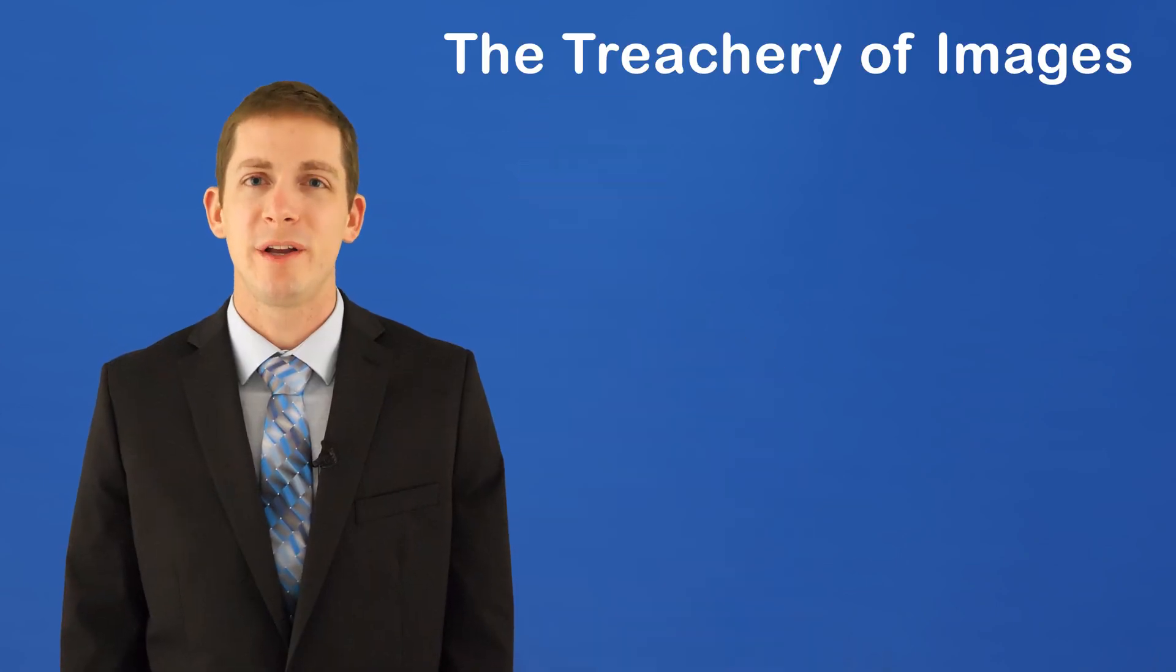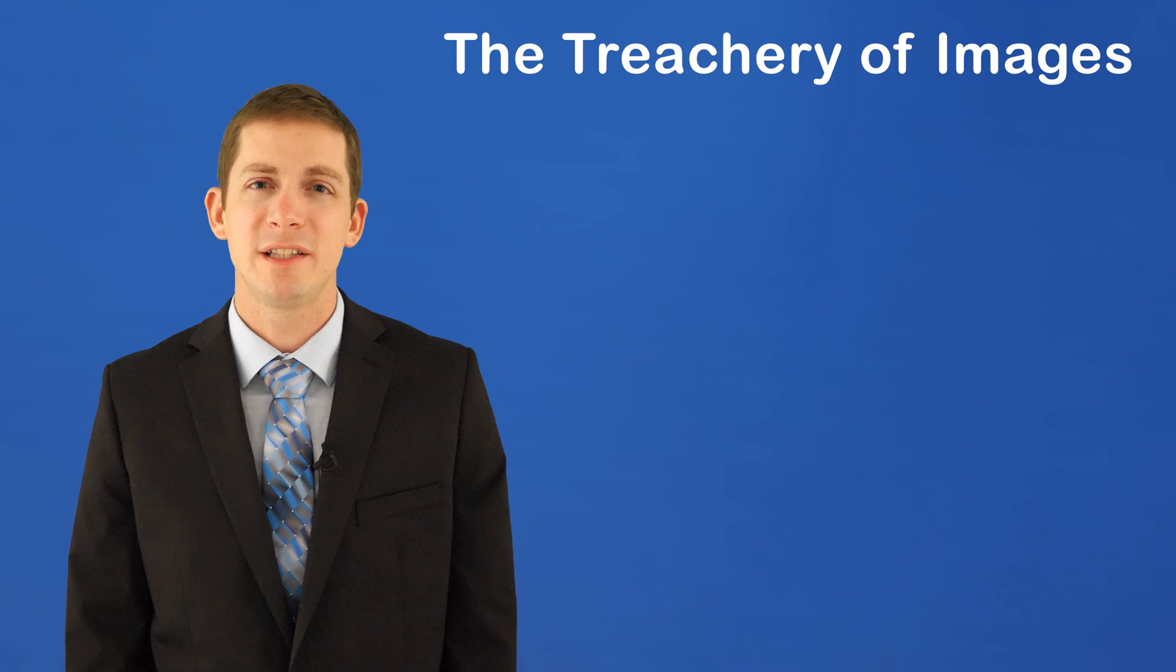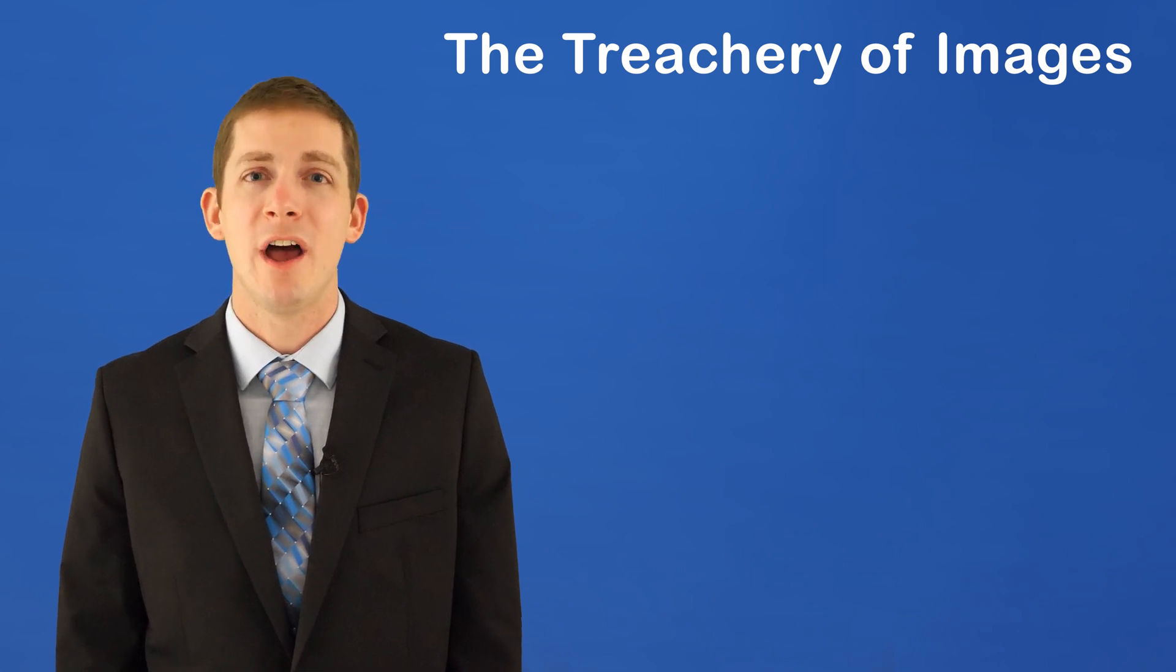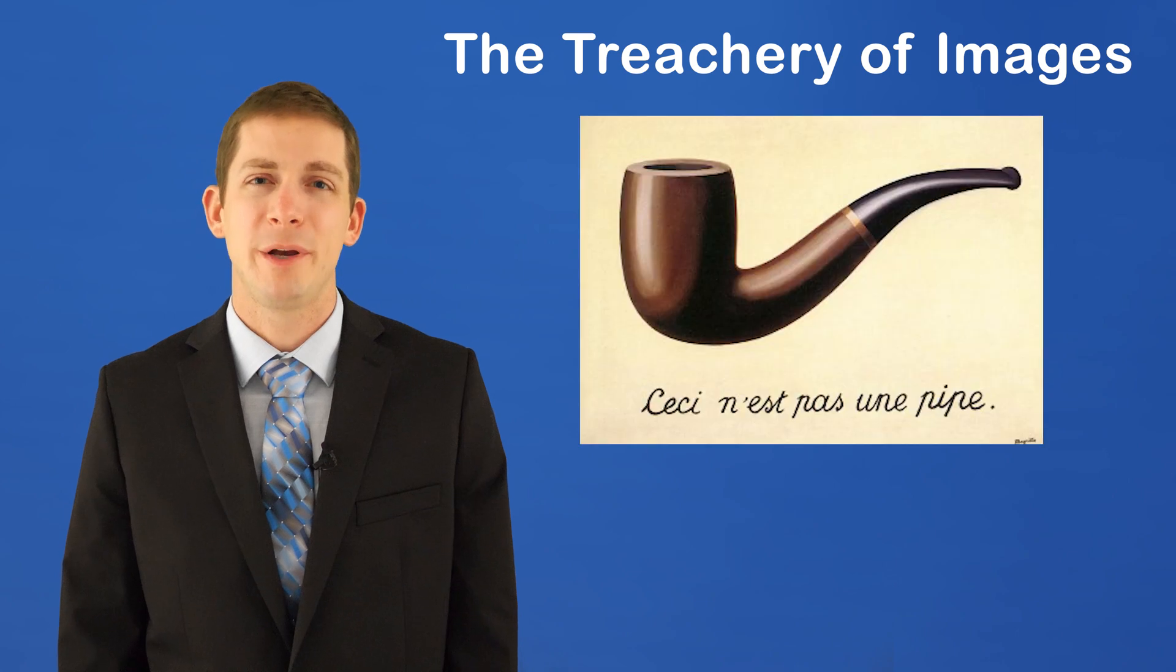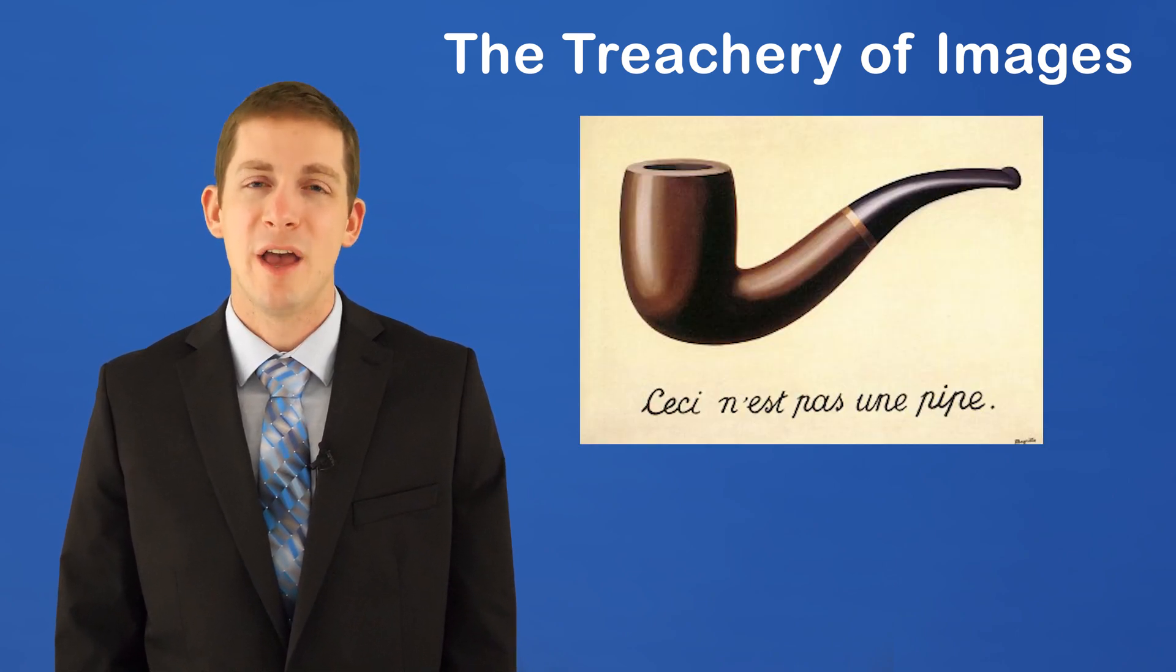A similar concept to math being an abstraction of reality is the treachery of images. And what this is: in 1929, a French painter named René Magritte painted a picture of a pipe. It was a painting on a canvas. And below it, in French, he wrote, quote, this is not a pipe.